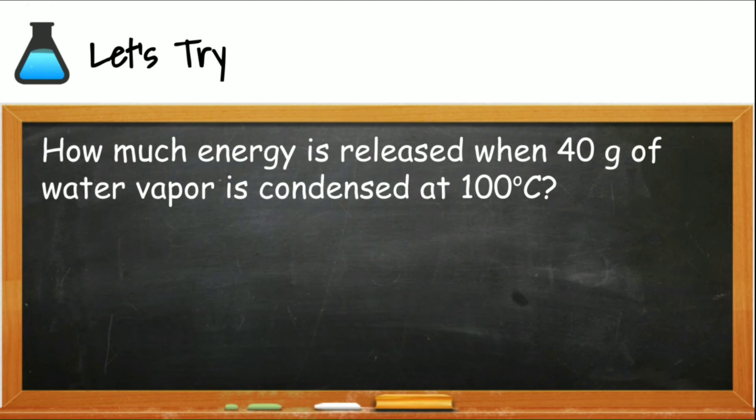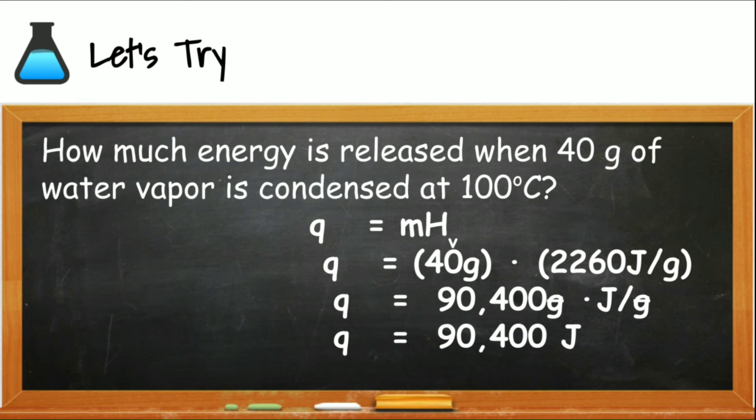Let's look at this other problem. How much heat energy is released when 40 grams of water vapor is condensed at 100 degrees Celsius? Here the keywords are vapor, condensed, and 100 degrees Celsius. That tells us we should use the equation q equals mH sub V for vapor. Remember, we're going to substitute the given mass and multiply that times the reference table B value for the heat of vaporization. Then from here, we're going to solve.